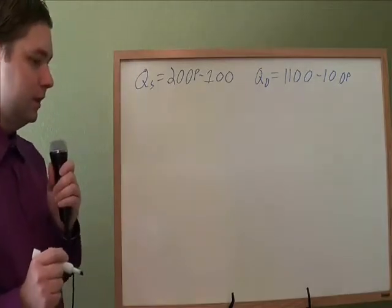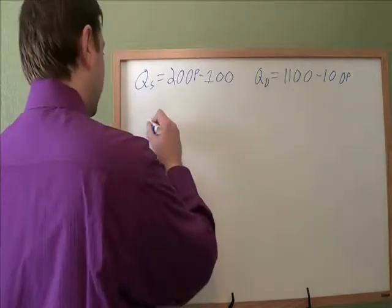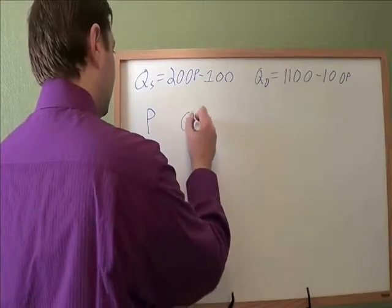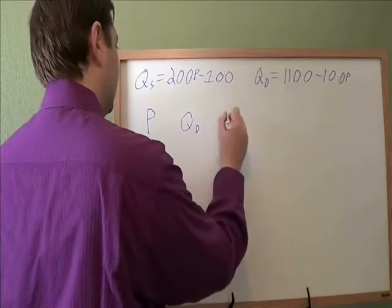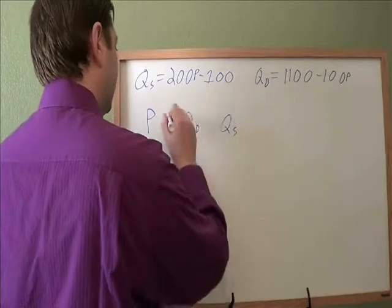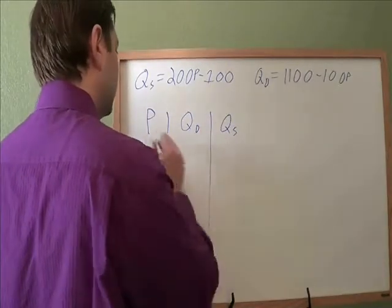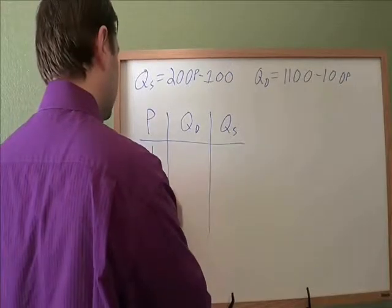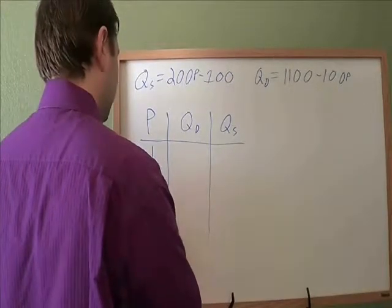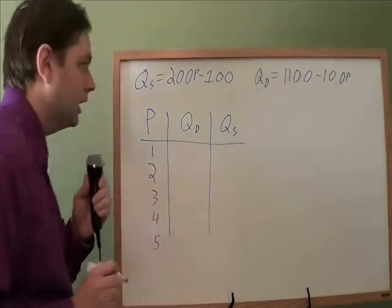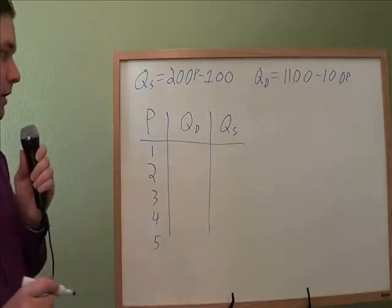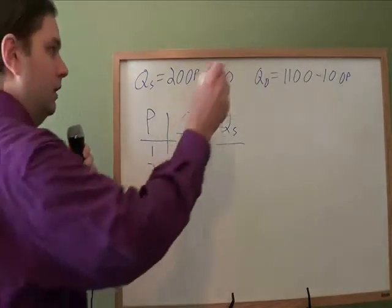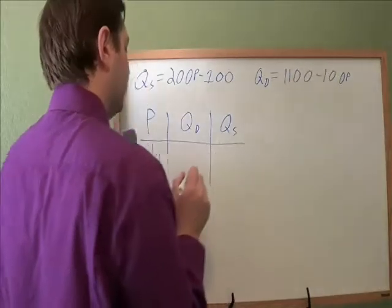Then for part B, we want a table showing the price, the quantity demanded, and the quantity supplied for a couple different prices. We want it for the price of $1, $2, $3, $4, and $5. And now to find each of these, we just take each price and plug it in for p in each of these formulas.